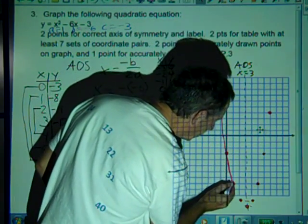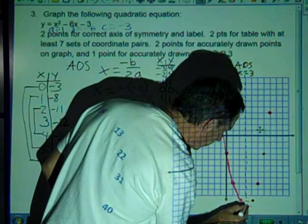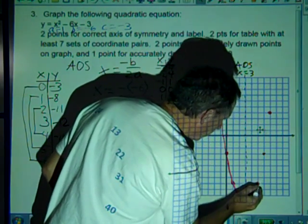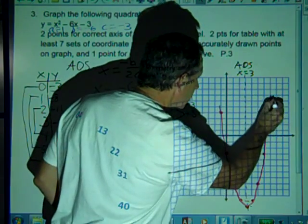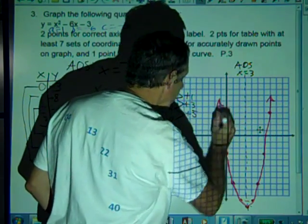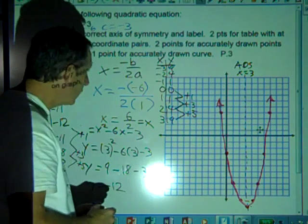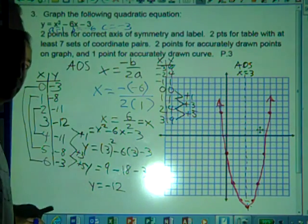And it doesn't need to be perfect, but you're going to have something that looks like this. And that is how to graph a quadratic function given in standard form. Thank you for viewing.